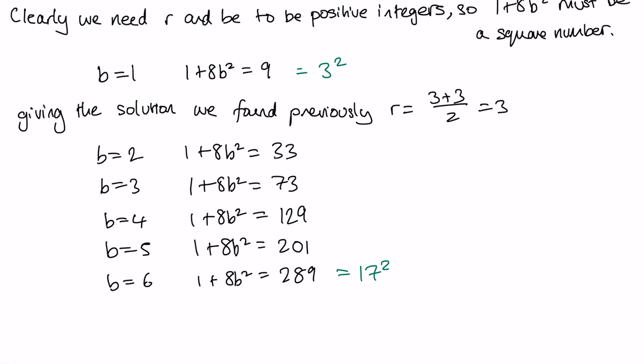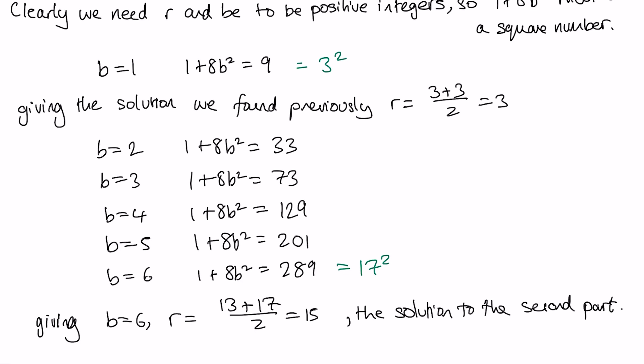And so that gives us the solution to the second part: b=6, and r equals (13+17)/2, putting it back into the formula, which is 15. And so that's the solution to the second part.